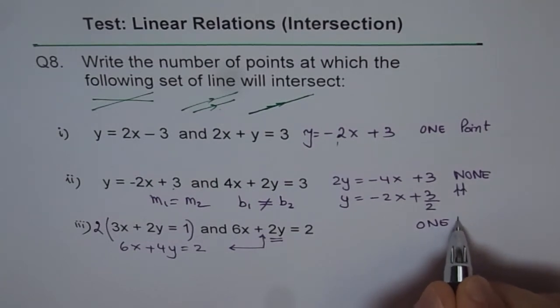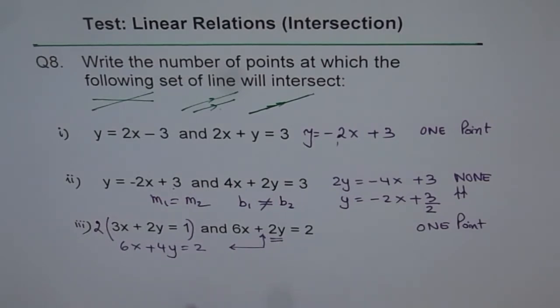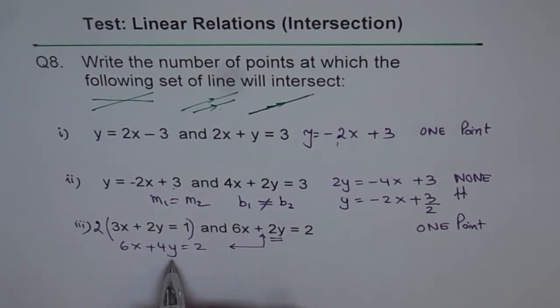So we have one point of intersection in this case. So 2y and 4y were different. And therefore, these two lines are not exactly the same. So we say that this set of lines will give us one point of intersection. So to confirm it, you should find the slope of both the lines.